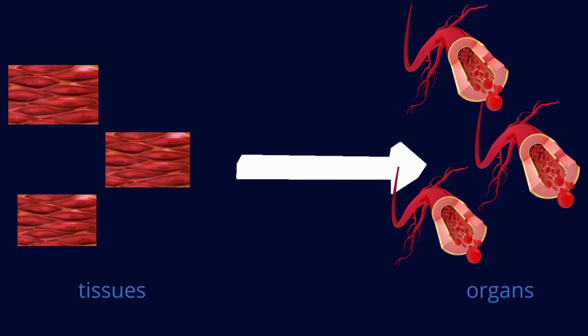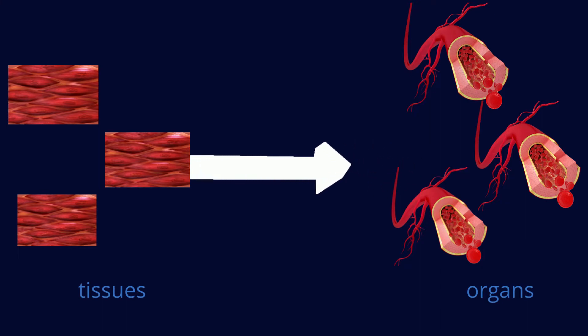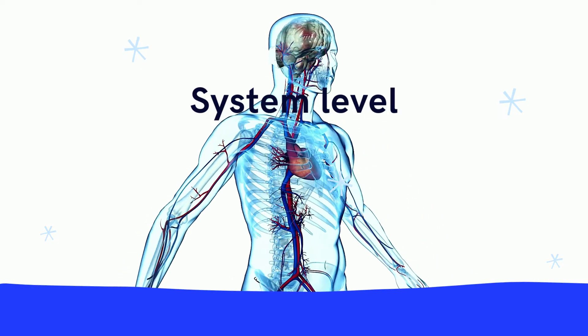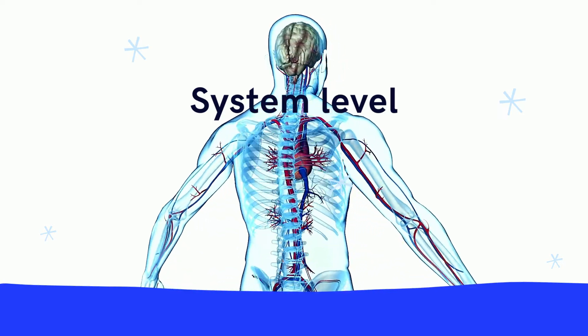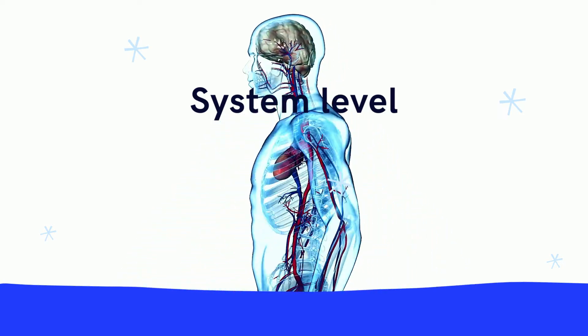Now it is important to note that organs have specific functions and recognizable shapes. By knowing that, we will be able to understand the next level, the system level.